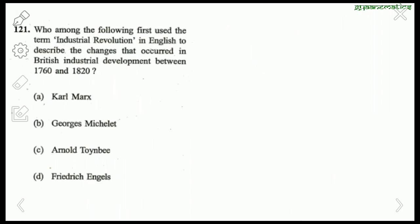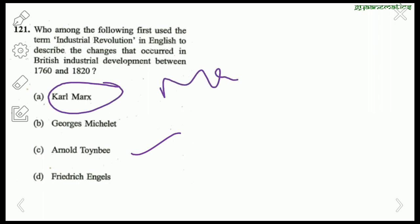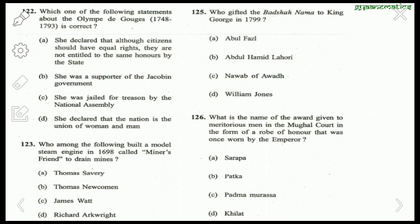Who first used the term 'Industrial Revolution' in English to describe changes in British industrial development between 1760 and 1820? The right answer is Arnold Toynbee. Karl Marx is related to Marxist theory.